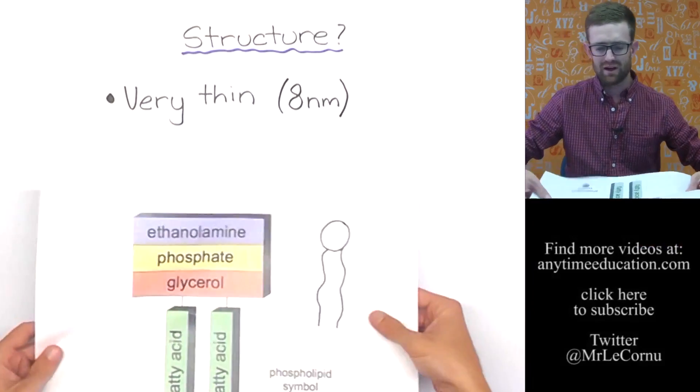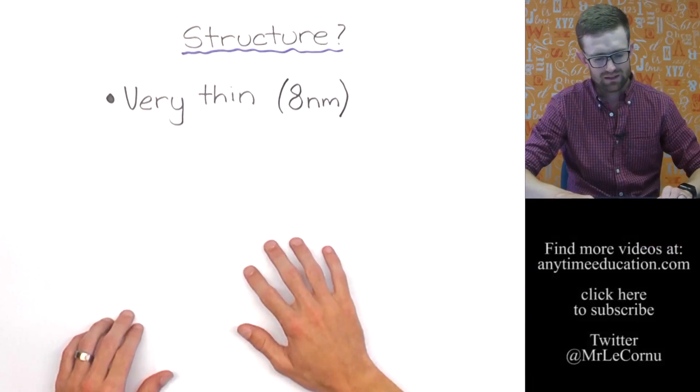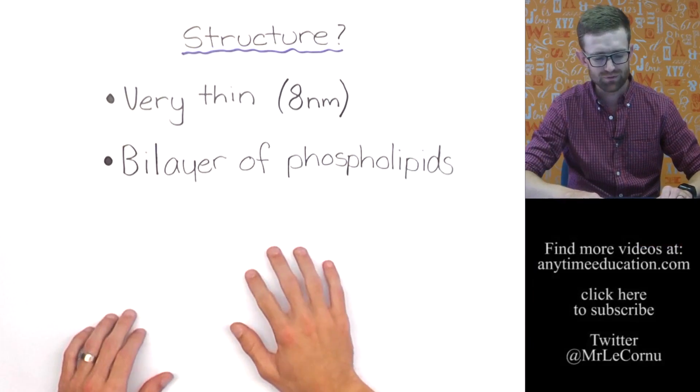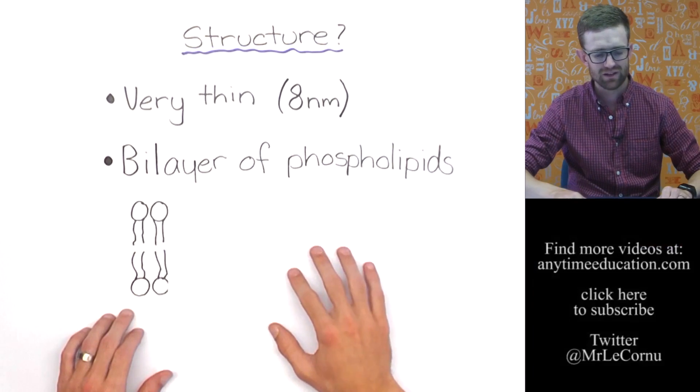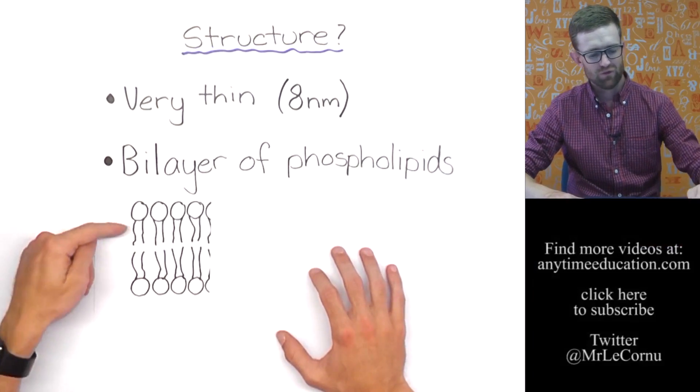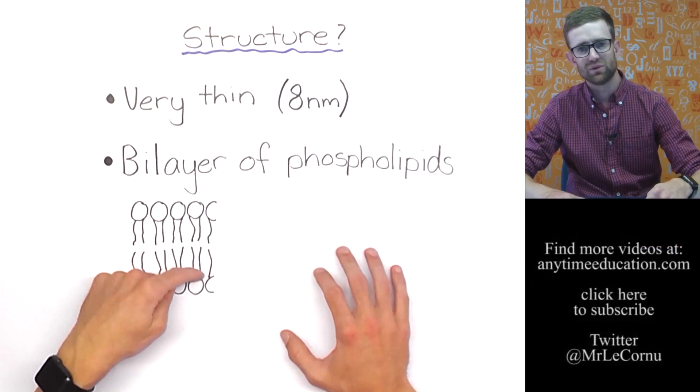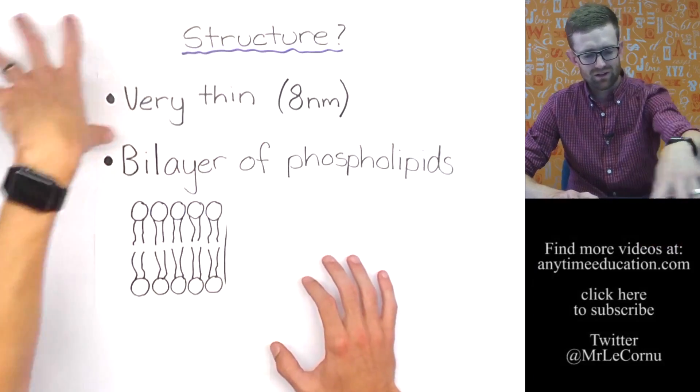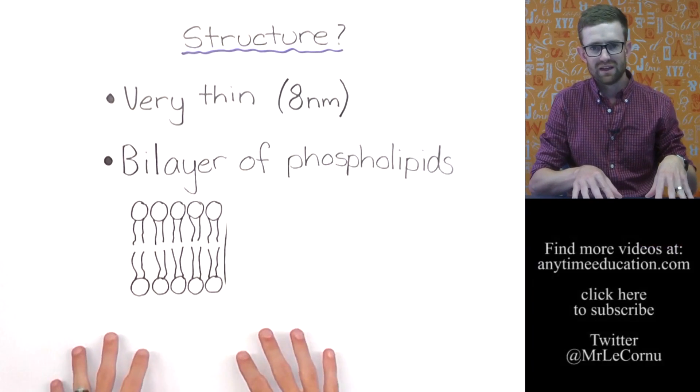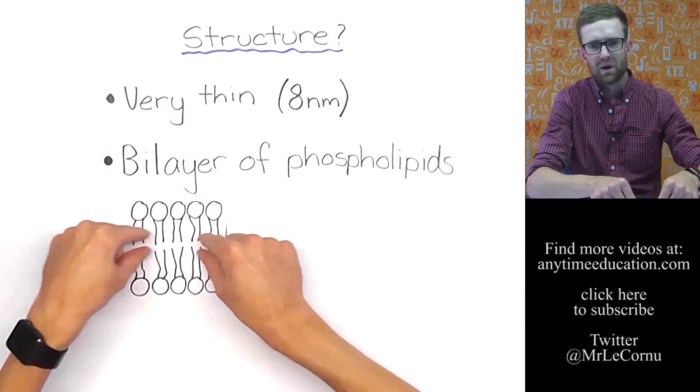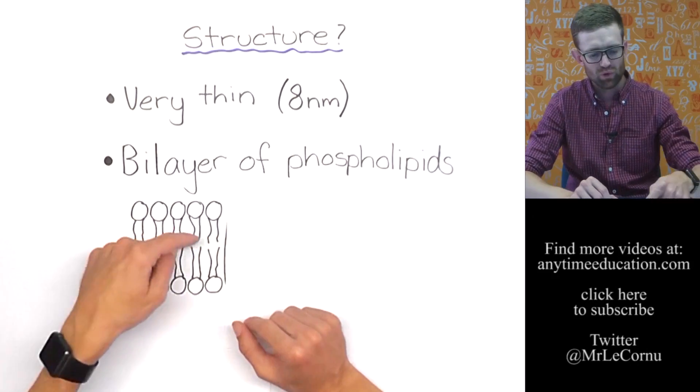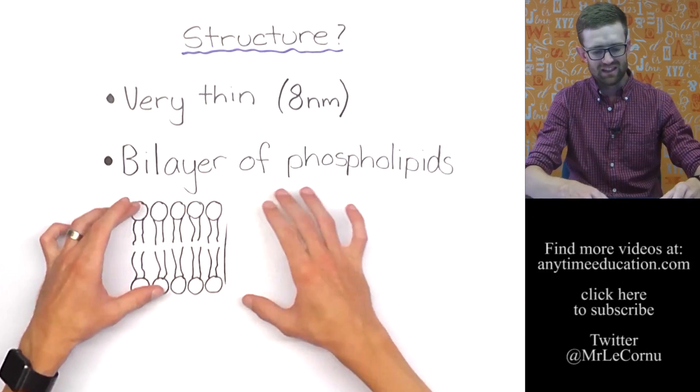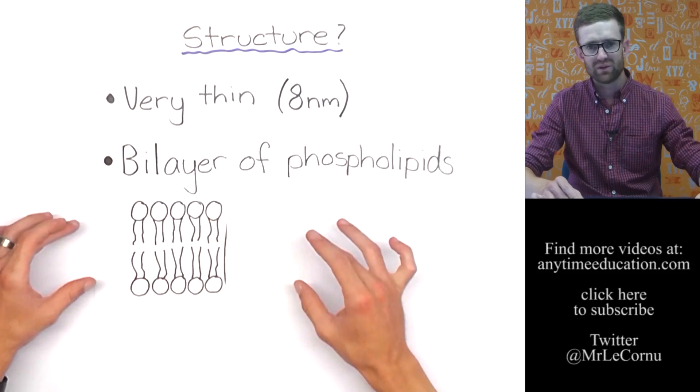What happens with the cell membrane is it forms a bilayer of phospholipids. So two layers of phospholipids and they take on this sort of structure. The fatty acid tails face inwards and the phosphate heads face outwards because outside of the cell and inside of the cell is going to be lots of water. But within the cell membrane it can stay away from the water, so that's why it takes on that bilipid layer.